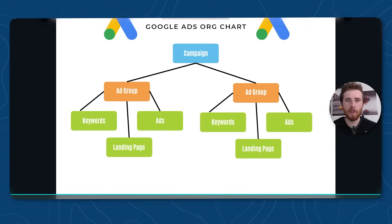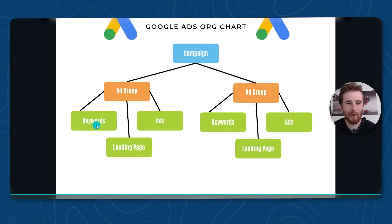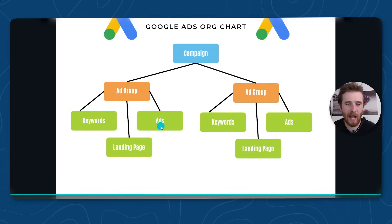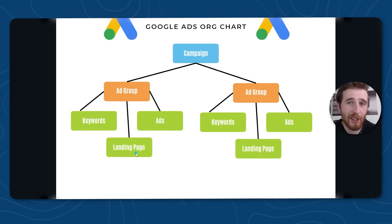I'll put a little graph on the screen just to explain it better. As you can see, you have the keywords, the landing pages, and the ads. If all three of those things line up, chances are your campaign is going to be doing well.